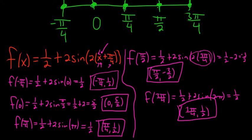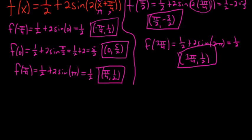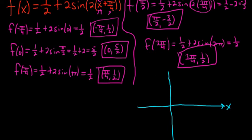So there are all our points. Let's go ahead and put everything together and graph it. Here is our y-axis and here is our x-axis. Negative π/4 will be here, then 0, then π/4, then π/2, then 3π/4. These are the numbers we got when we subdivided our interval.